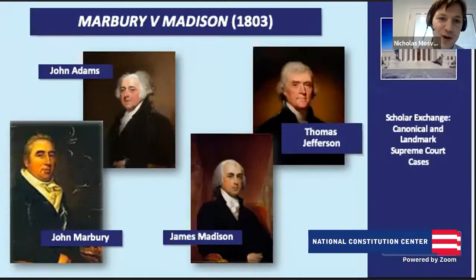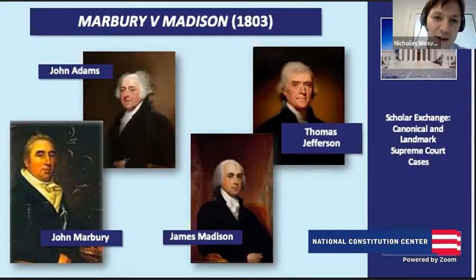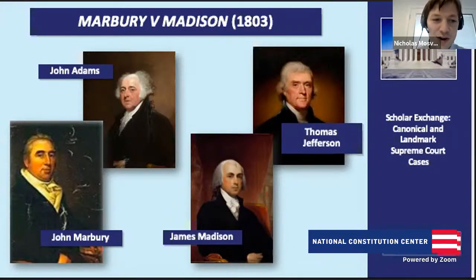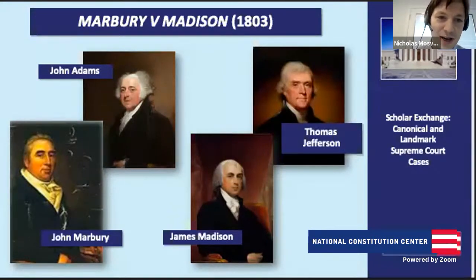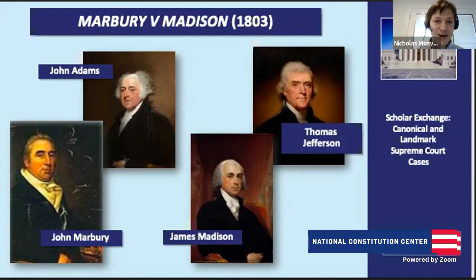Commissions are supposed to go out for those new officers, including justices of the peace in Washington, DC. John Marbury is a Federalist who was given a commission to be a justice of the peace. However, his commission is not delivered. John Marshall was Secretary of State and had just been appointed Chief Justice — a bit overwhelmed, he doesn't deliver all the commissions. Thomas Jefferson's administration comes in, James Madison is the new Secretary of State, and Jefferson tells him not to send those commissions out. John Marbury sues, wanting the court to give him his commission.